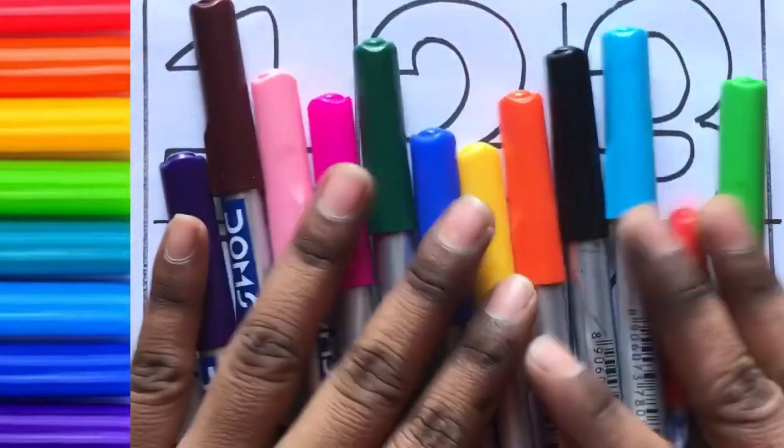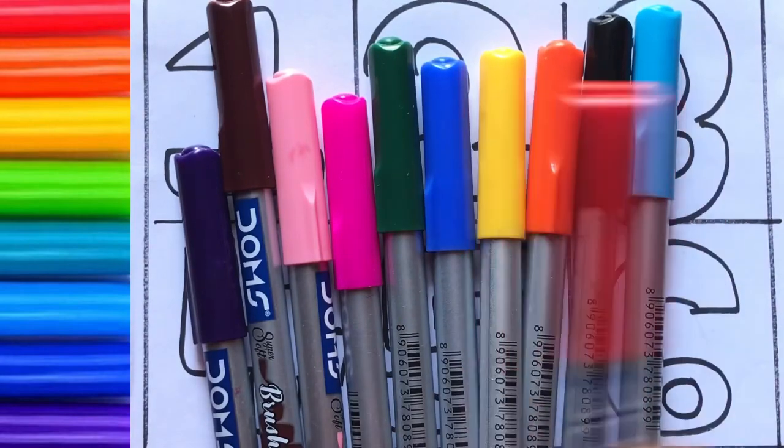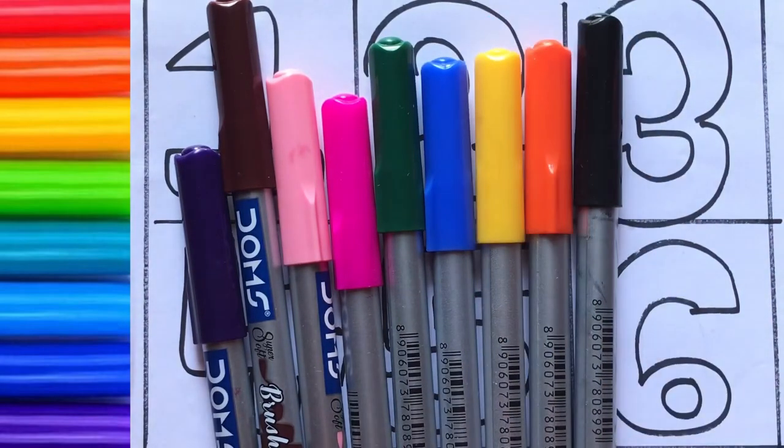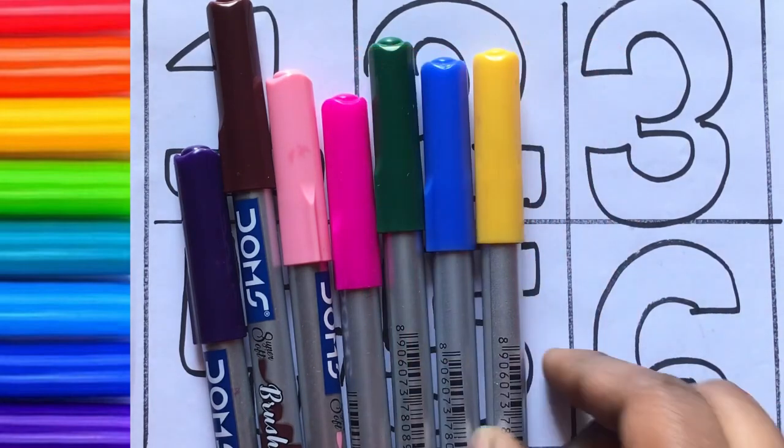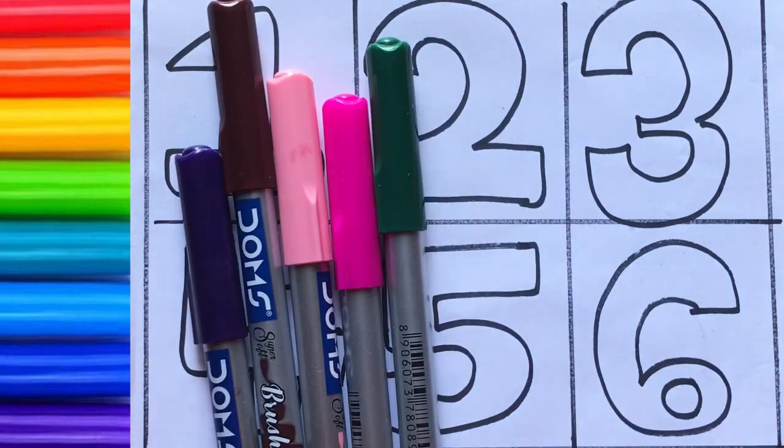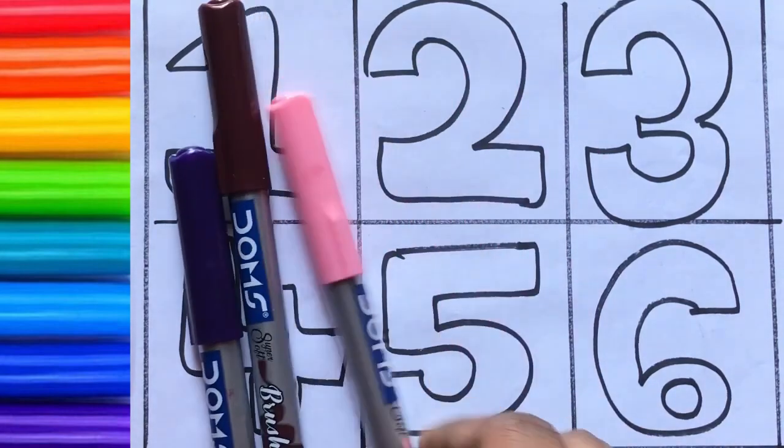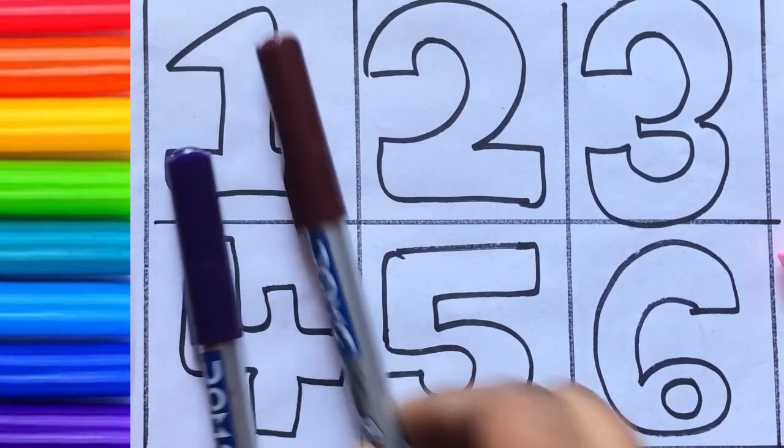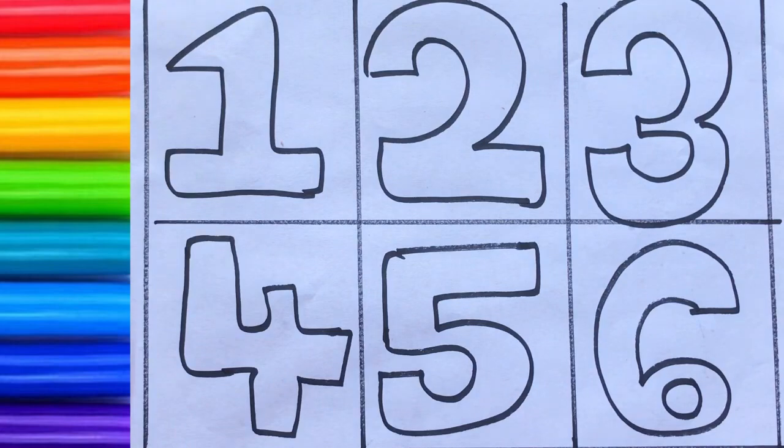Let's learn names like green color, red color, sky blue color, black color, orange color, yellow color, sky blue color, green color, pink color, light pink color, brown color, and violet. Let's draw the numbers. Light pink color.